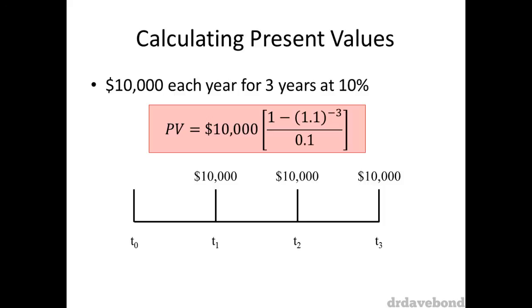And then multiplied by the payment of $10,000. Work that all through, and we end up with $24,869.